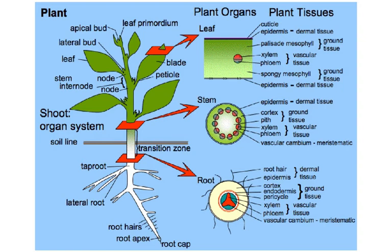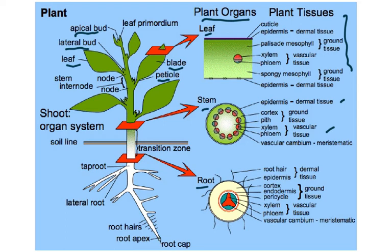Looking at a diagram, organs in a plant are the leaf, stem, and root. The leaf has tissues including cuticle, epidermis, palisade mesophyll, and xylem/phloem as vascular tissue. The stem has epidermis as dermal tissue and cortex as ground tissue. The root has root hair, epidermis, cortex, and endodermis. Important terms include: petiole, blade, apical bud, lateral bud, node, internode, root apex, root cap, root hairs, main root, and lateral roots.